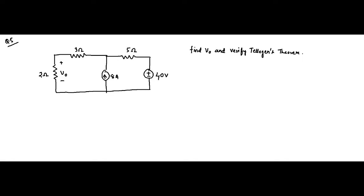Hello friends, welcome to Engineering Tutorial. We'll continue our discussion related to network theorems. This is the fifth question related to Tellegen's theorem. Here we have a circuit where we have to verify Tellegen's theorem, and there is an extra part to find the voltage drop across the 2Ω resistor. We will be using nodal analysis to find the branch currents and then verify power supplied and absorbed.